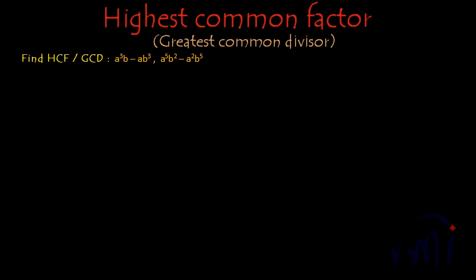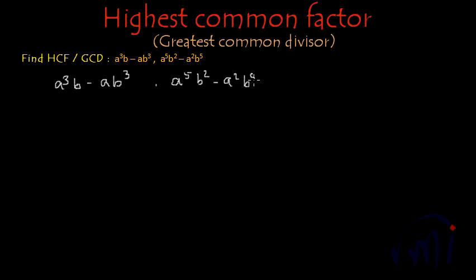We have to find the highest common factors of a³b minus ab³ and a to the power 5 b square minus a square b to the power 5. First we will find the factors of these two expressions and then we will find the common factors. So the first term for which we have to find factors is a³b minus ab³.